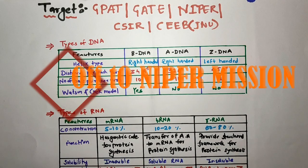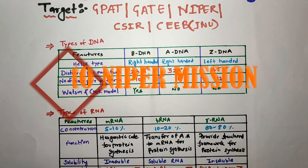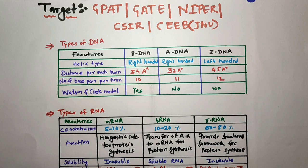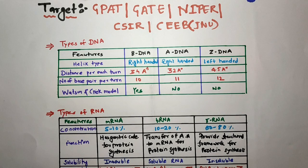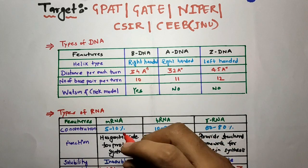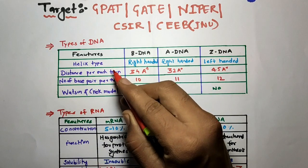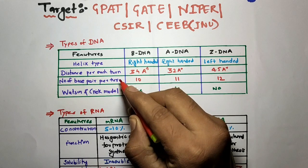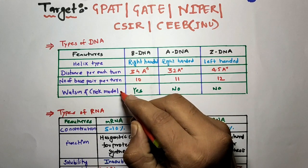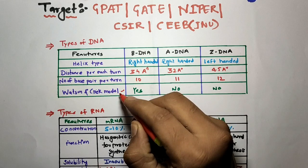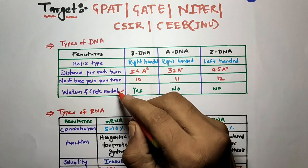Hello friends, today we are going to discuss the types of DNA and types of RNA on the basis of their features. In the last video we discussed the difference between DNA and RNA along with Chargaff's rules and what is the original reaction. In this video we will differentiate the types of DNA on the basis of their helix type, distance per each turn, number of base pairs per turn, and whether they follow the Watson and Crick model.